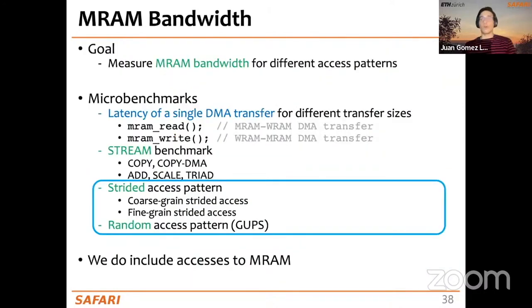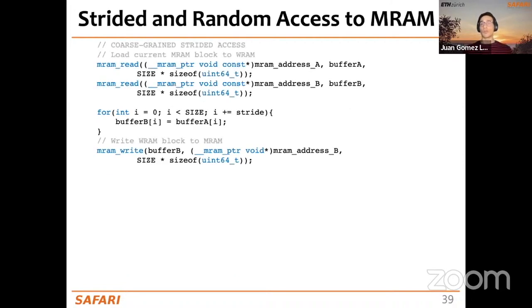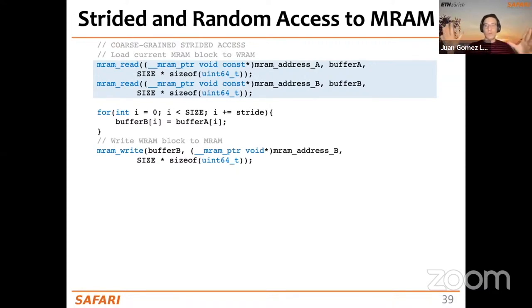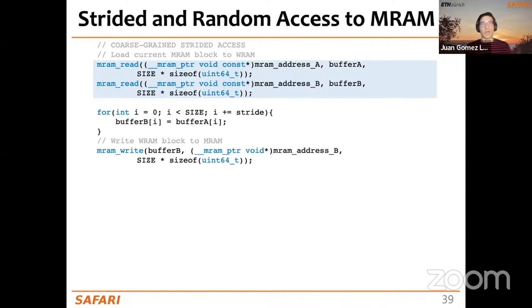The next experiment covers strided and random access patterns with two approaches: coarse-grained and fine-grained strided access. In coarse-grained strided access, we bring a whole chunk of data from MRAM into WRAM, then perform strided accesses within WRAM. Instead of incrementing index i by one each iteration, we increment by the stride, so with stride two we access only even-numbered elements of buffer A and B.